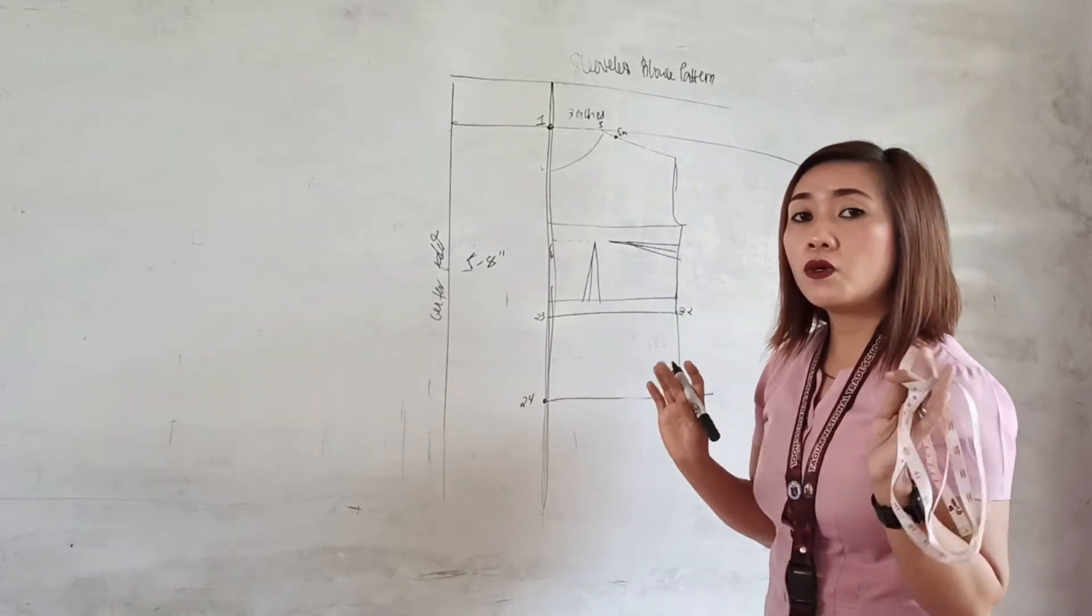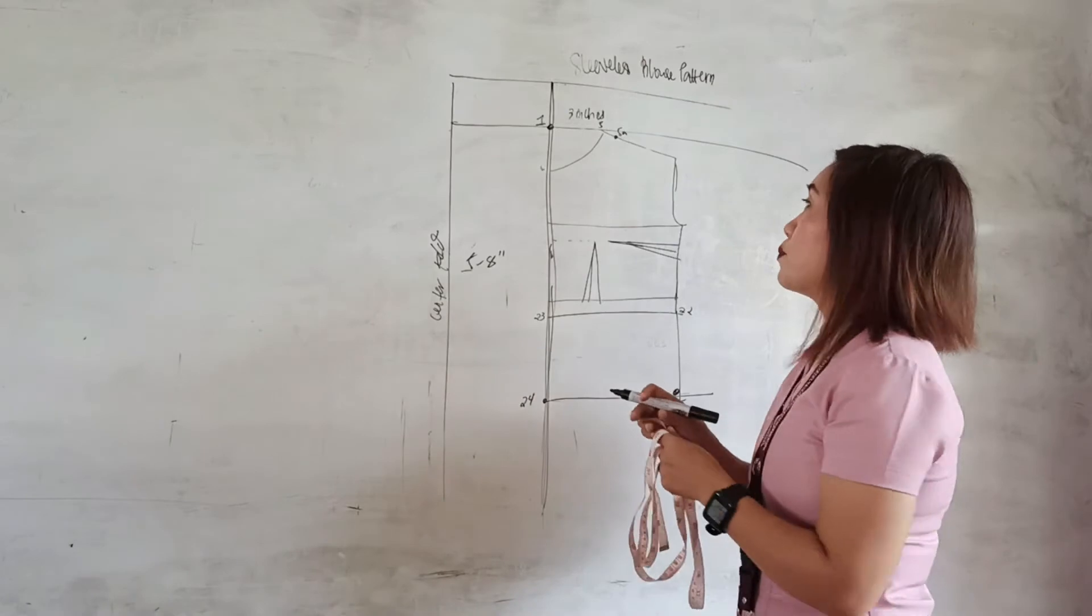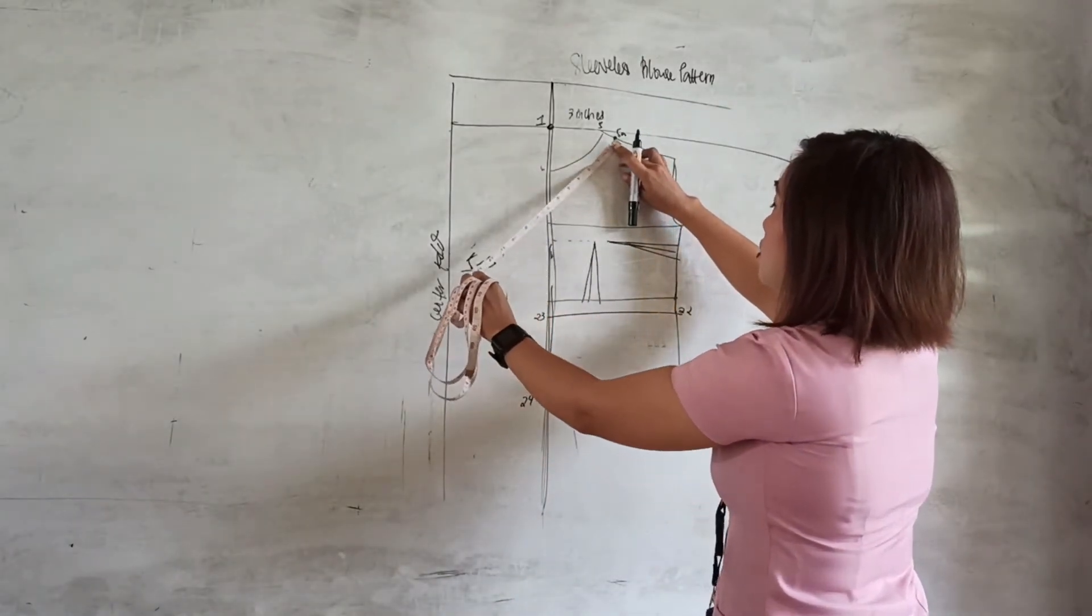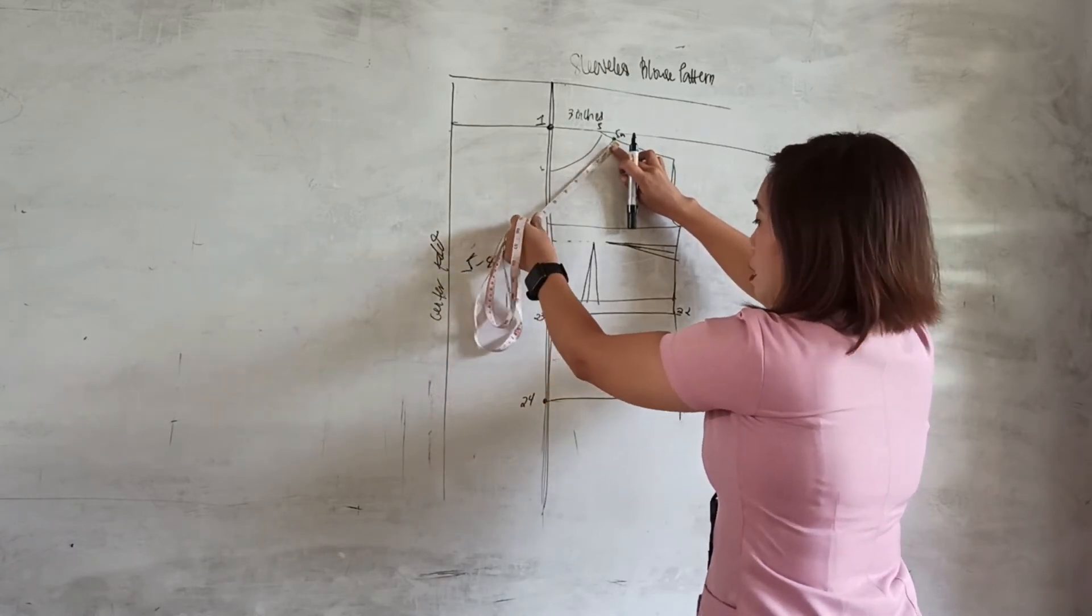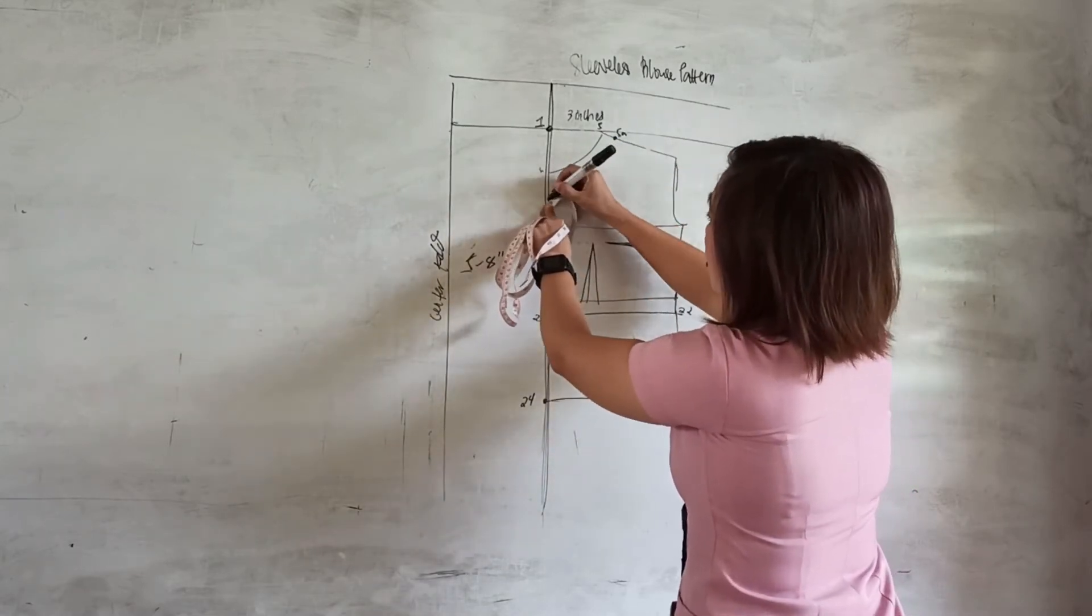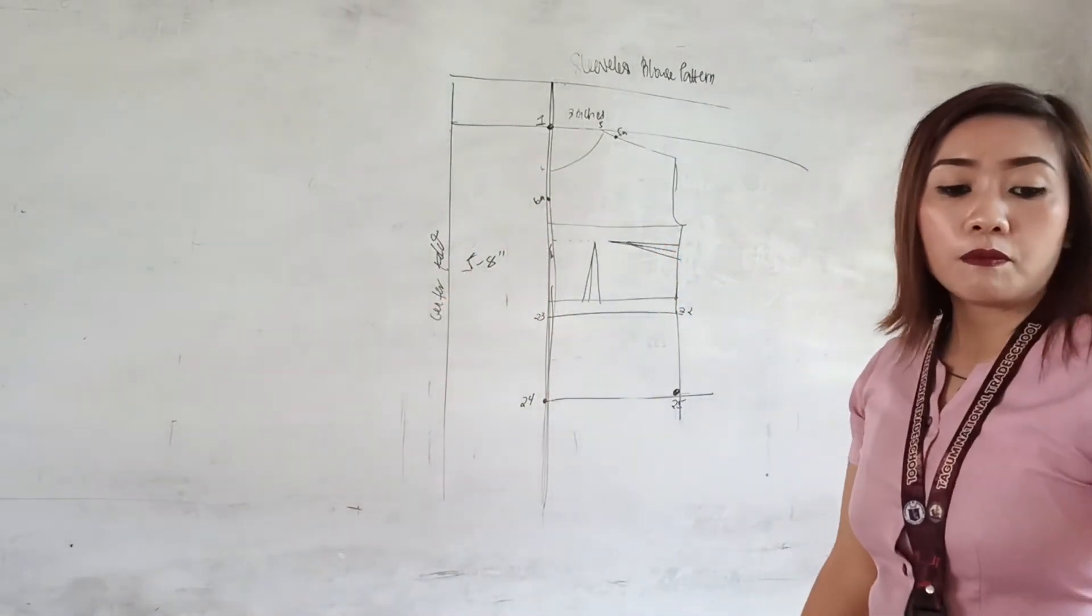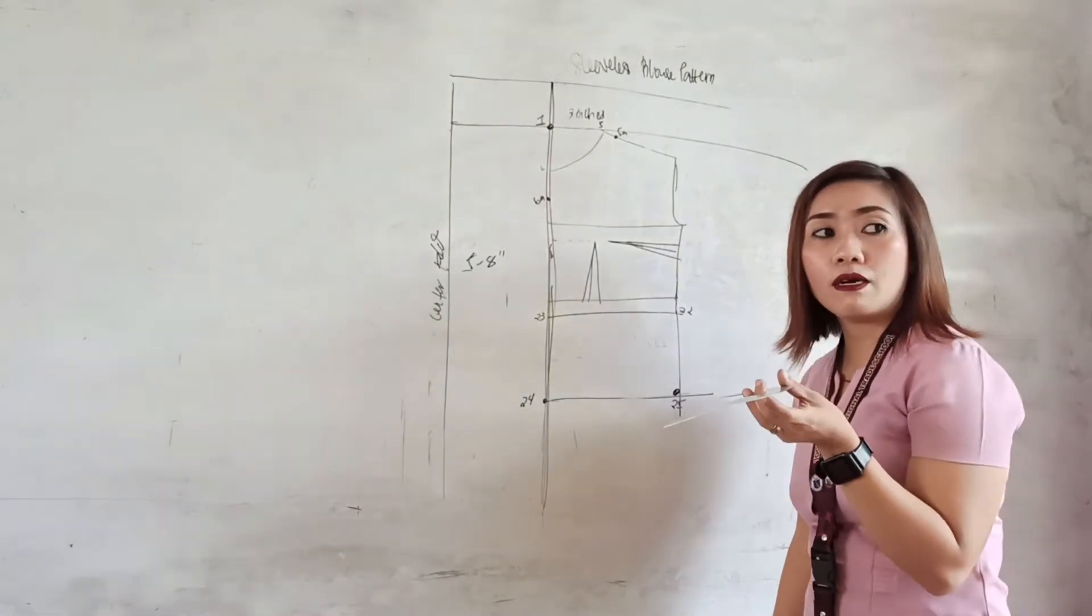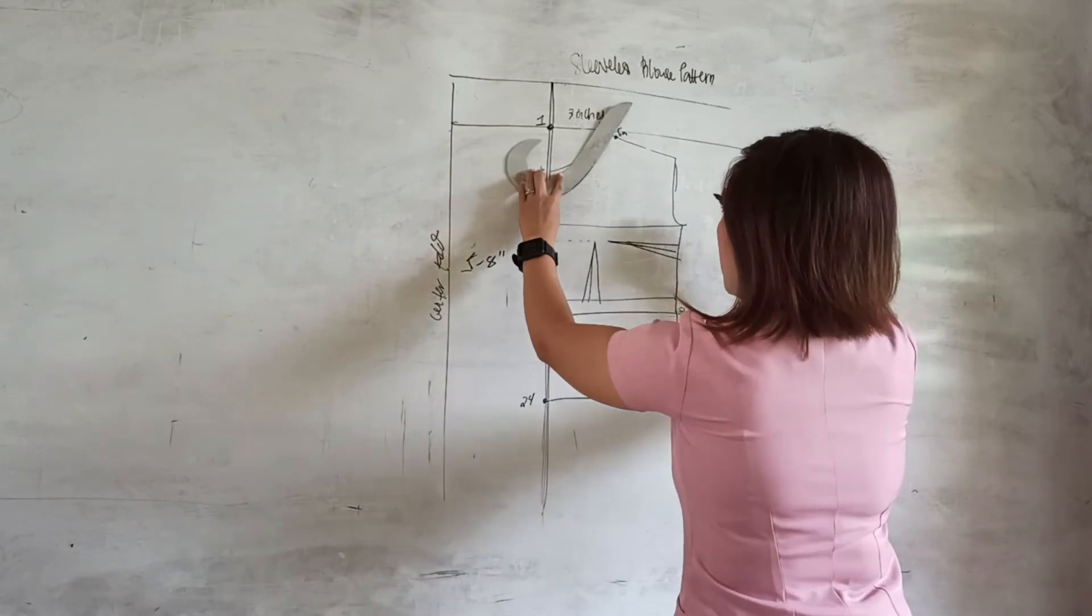From point 5a going to 6a, we measure six inches diagonal to the center front for the depth of our sleeveless blouse and mark point 6a. Then connect points 5a and 6a using your French curve if you want a slightly curved neckline.